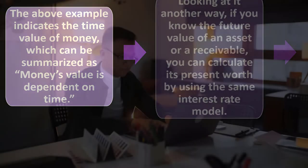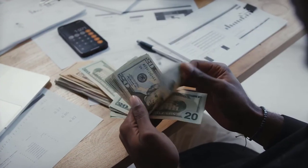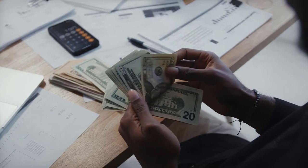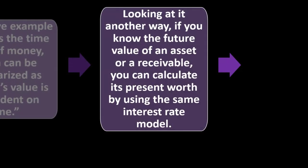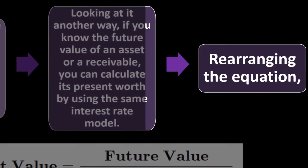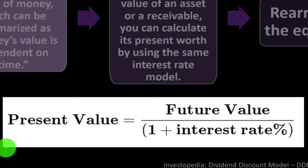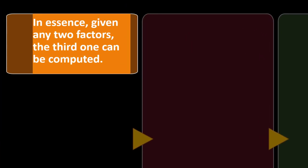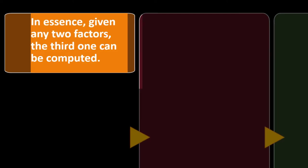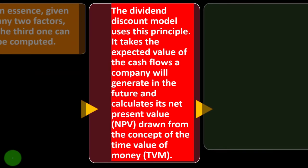Mathematically, future value equals present value times one plus the interest rate. This indicates the time value of money: money's value is dependent on time. You'd rather have cash today because it could be put to work. Looking at it another way, if you know the future value of an asset, you can calculate its present worth: present value equals future value divided by one plus the interest rate.